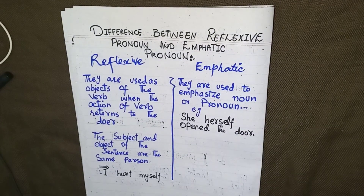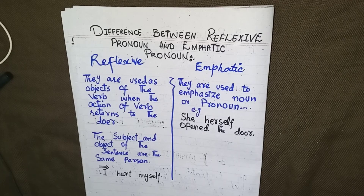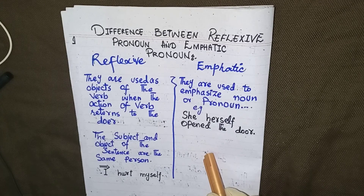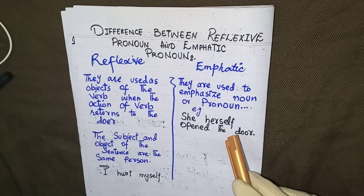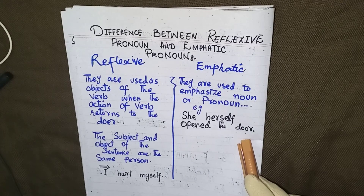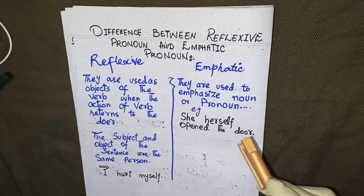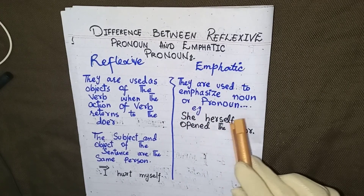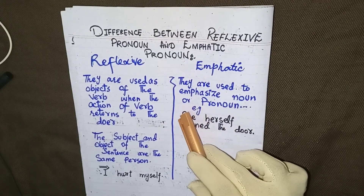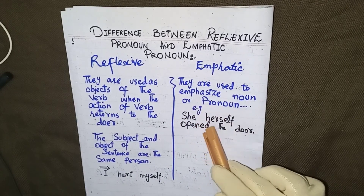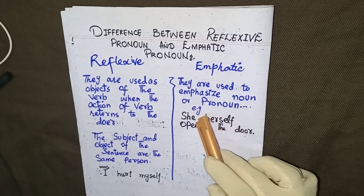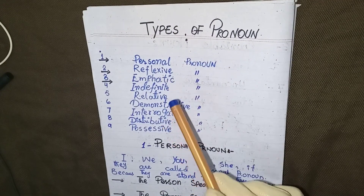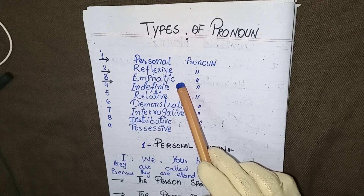An emphatic pronoun is used to emphasize a noun or pronoun. For example: 'She herself opened the door.' Here 'herself' is an emphatic pronoun. So we have discussed personal pronoun, reflexive pronoun, and emphatic pronoun.